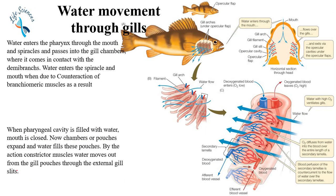Now, water movement through the gills. Here is the complete mechanism of movement of water through the gills. When water enters the pharynx through the mouth and spiracles, it passes into the gill chambers where it comes in contact with the demi-branches.